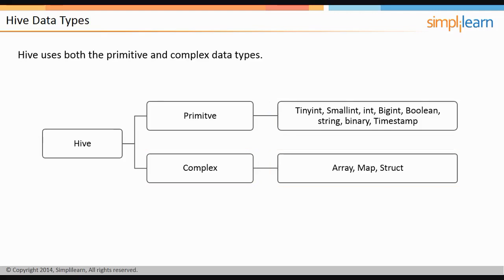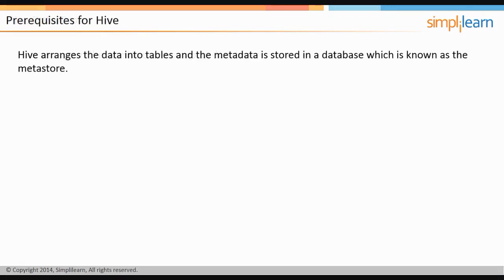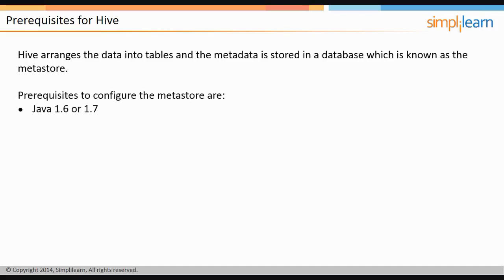Hive arranges the data into tables, and the metadata is stored in a database known as the Metastore. To configure the Metastore in your local system, certain prerequisites must be met: Java 1.6 or 1.7, Hadoop 1.0 or 2.0 or higher, and Linux and Windows for production. The most commonly used development environment is Mac.